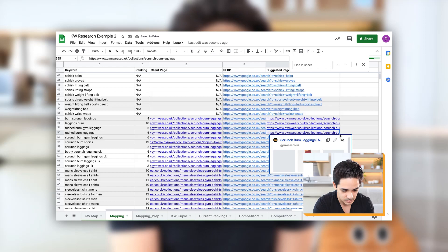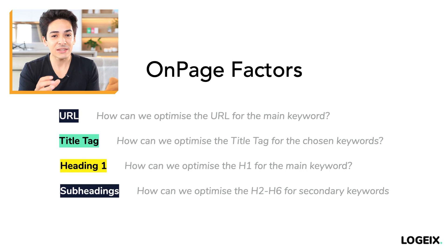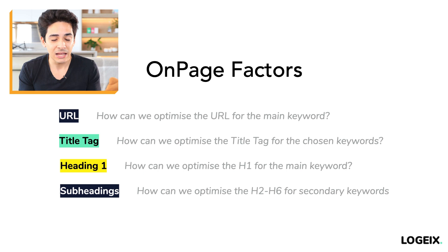For example, we have the URL of the page. Does that URL contain the main keyword we selected? We have the title tag — how can we optimize it for both the main keyword and ideally some secondary keywords? And the H1, same thing — how can we optimize it for that main keyword? And the subheadings — how can we optimize those to include secondary keywords within the overall topic? It's essentially using that keyword data to optimize the page.